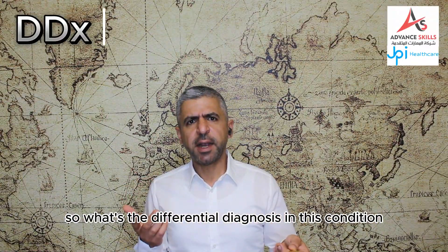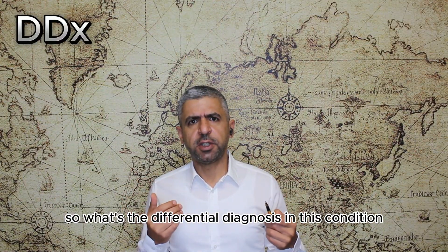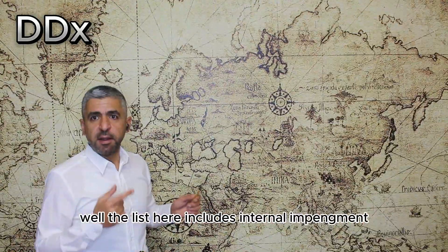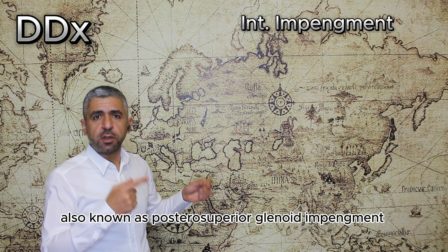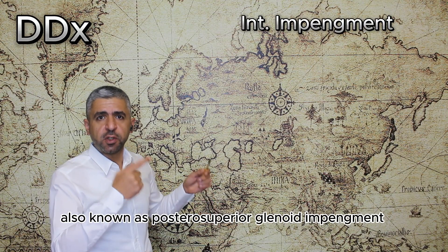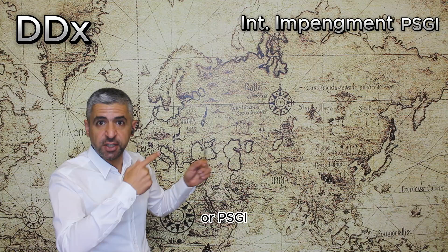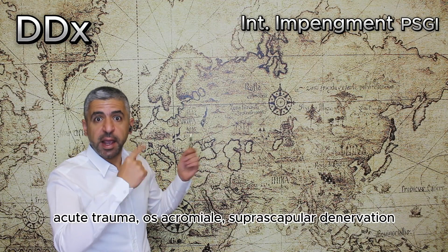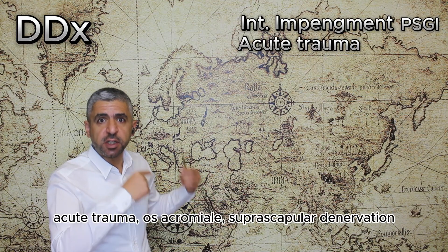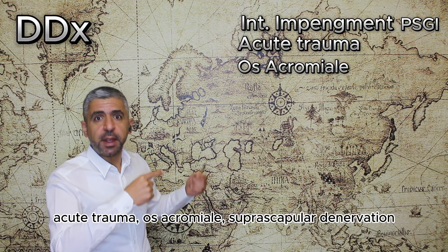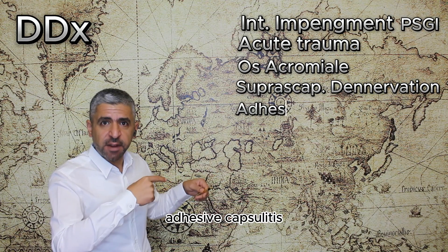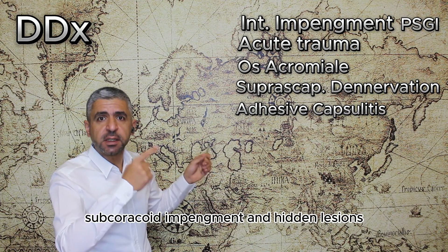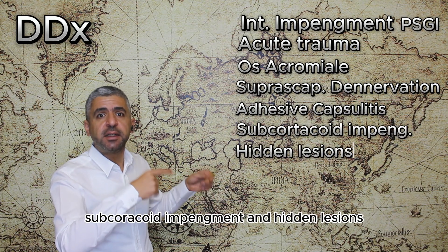The differential diagnosis for subacromial impingement includes: internal impingement (also known as posterior superior glenoid impingement or PSGI), acute trauma, suprascapular denervation, adhesive capsulitis, subcoracoid impingement, and hidden lesions.